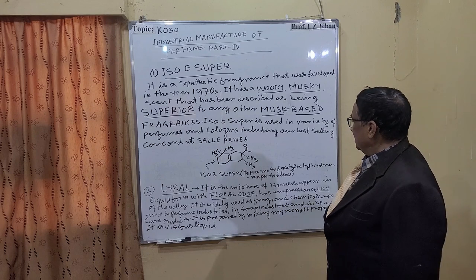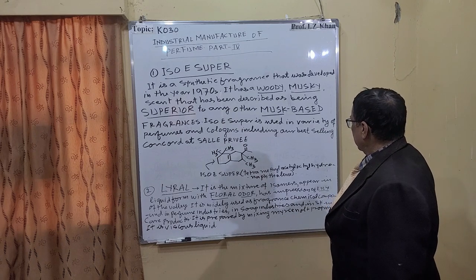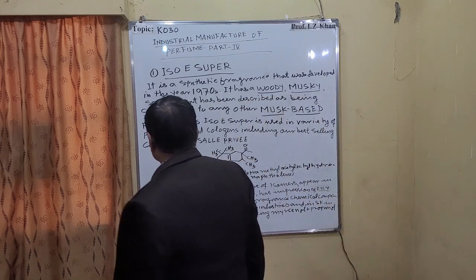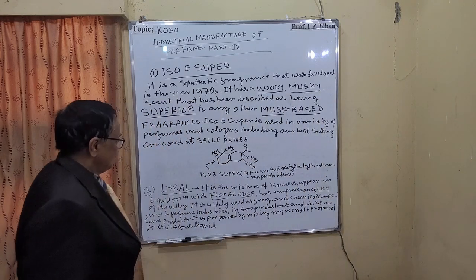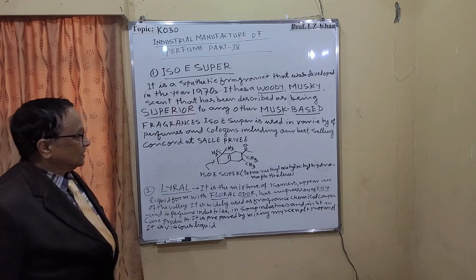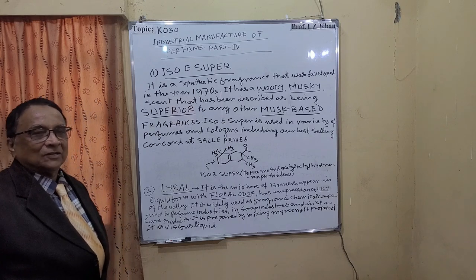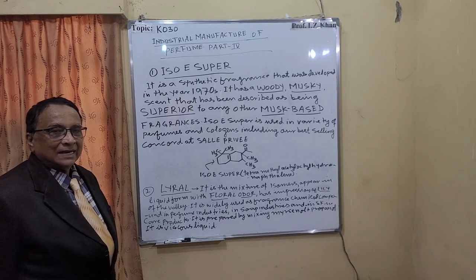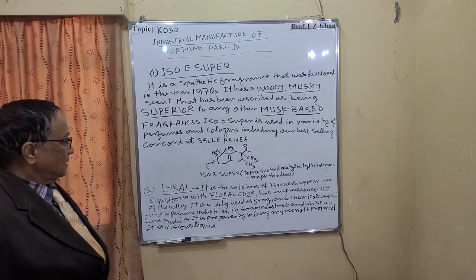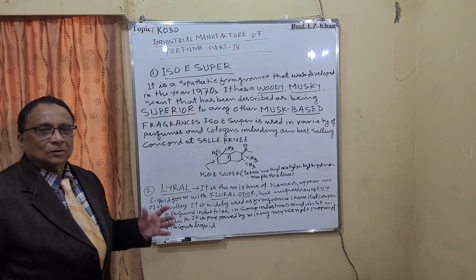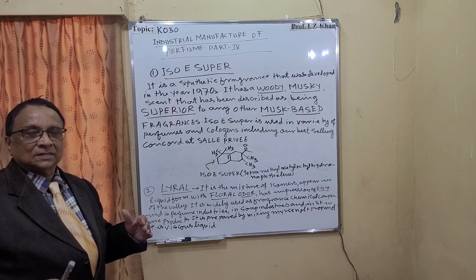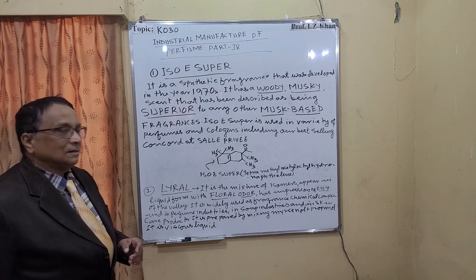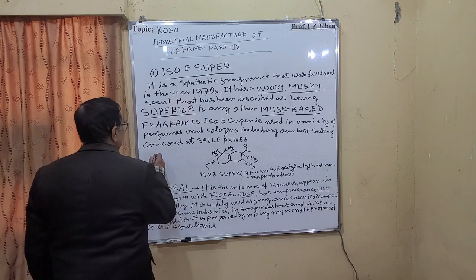The second chemical is Lyral. It is a mixture of isomers - it is a myrcenol, and myrcene is a type of terpene. Myrcene is converted into myrcenol, and when propanol is added to this myrcenol it becomes a thick sticky mass. That is why Lyral, once you are going to manufacture sanitizer, is called the main material of sanitizer.